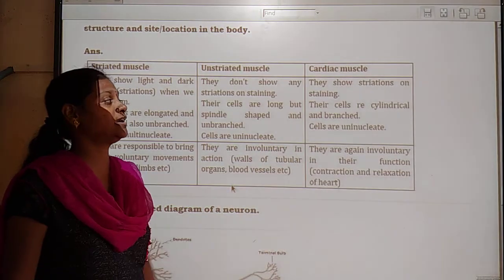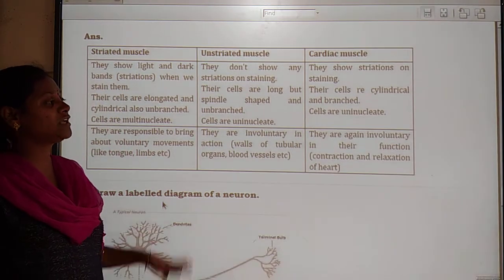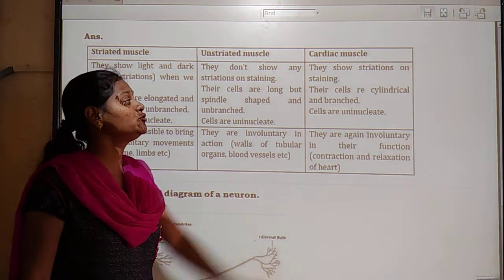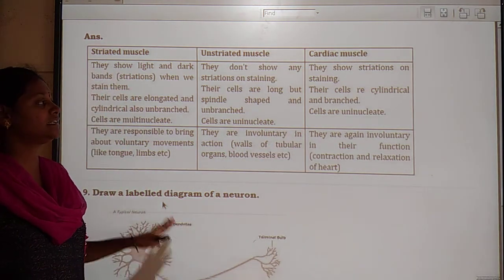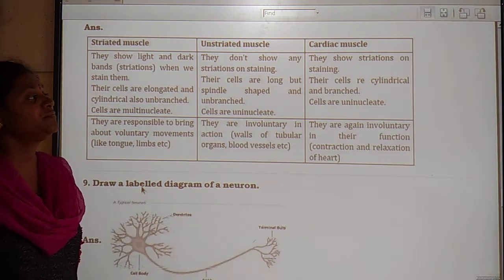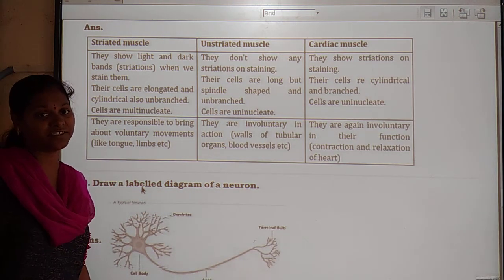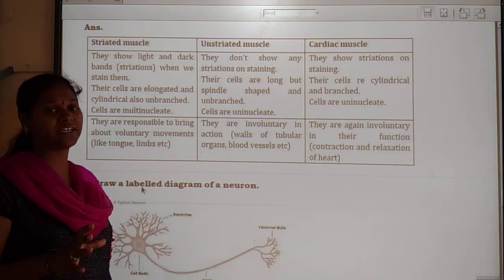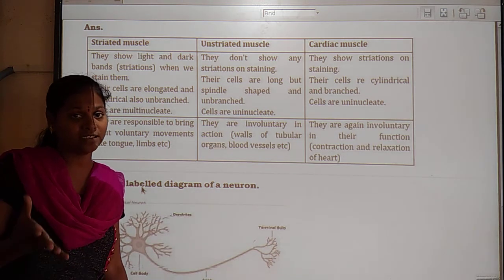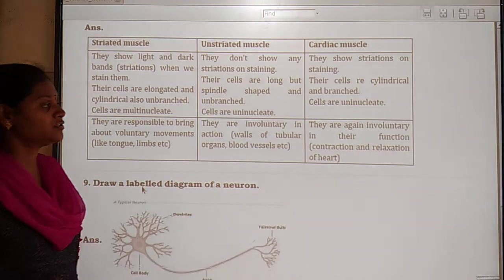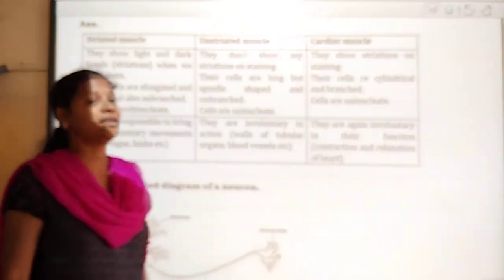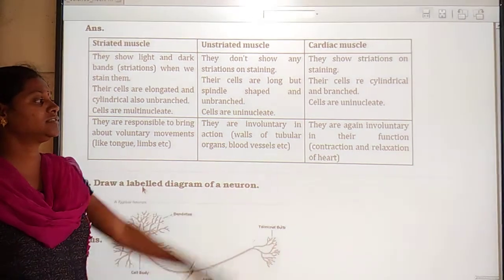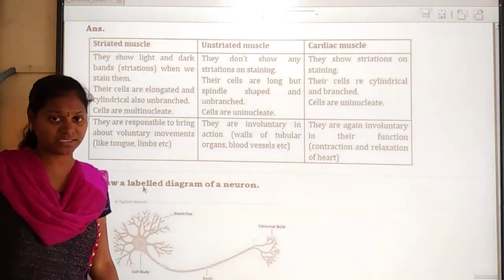The next type is cardiac muscles, which are also involuntary muscles. They show striations. Their cells are cylindrical and branched, and they are located in our heart. Cardiac muscles are involuntary in nature.